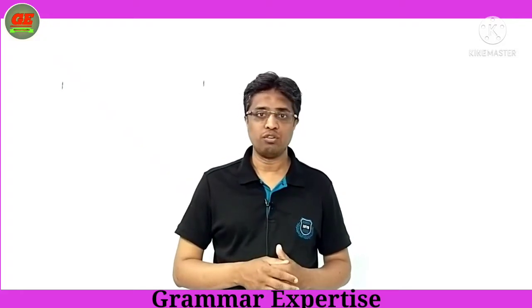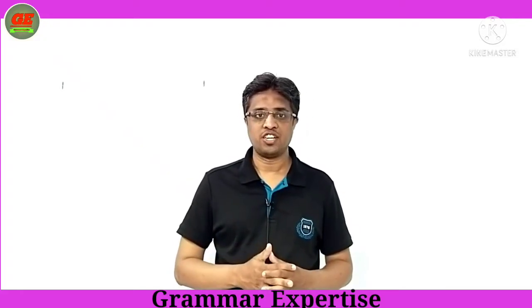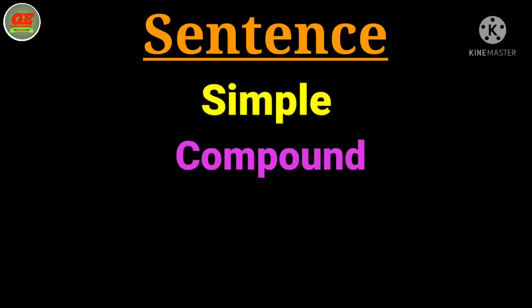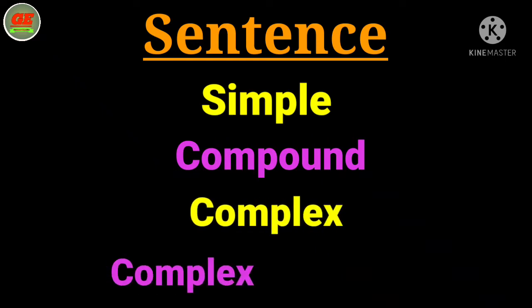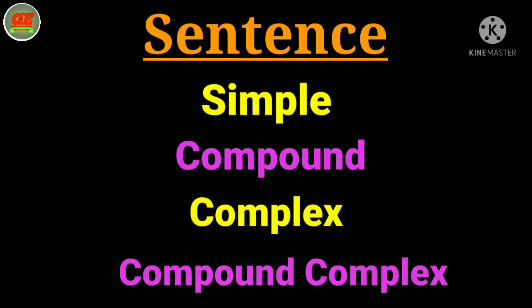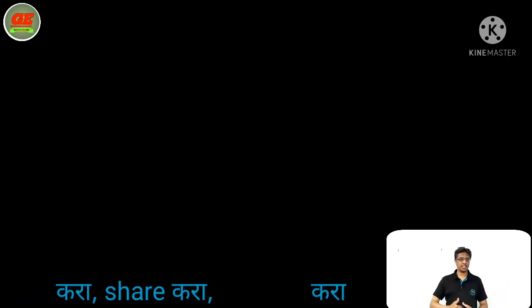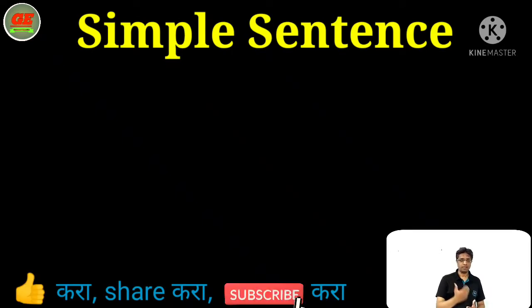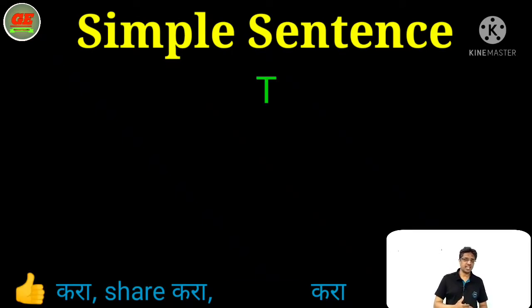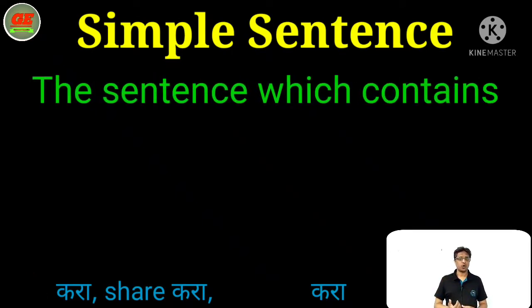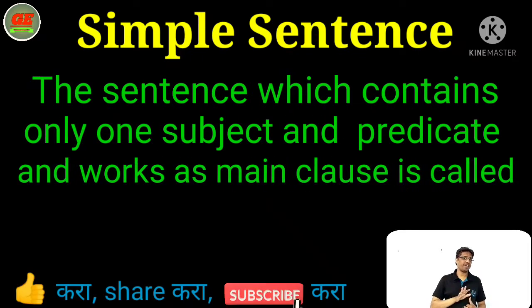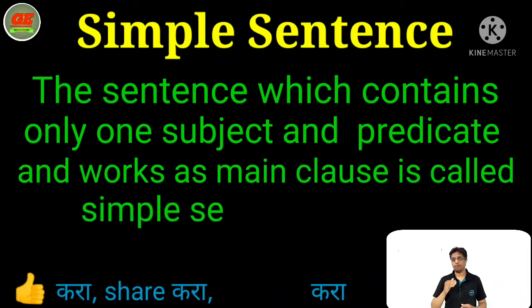So let's start today's class. Let's discuss the first type of sentence — that is the simple sentence. Definition: the sentence which contains only one subject and predicate and works as a main clause is called a simple sentence.